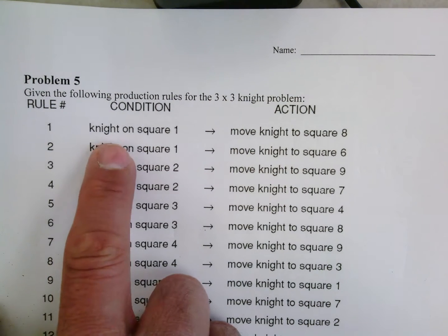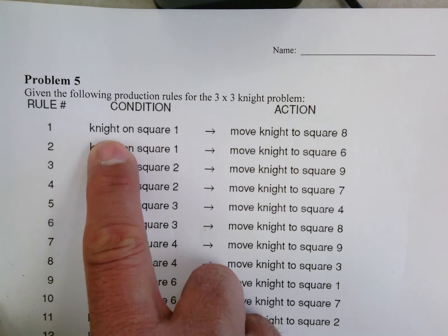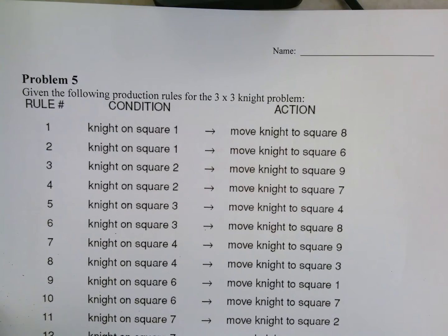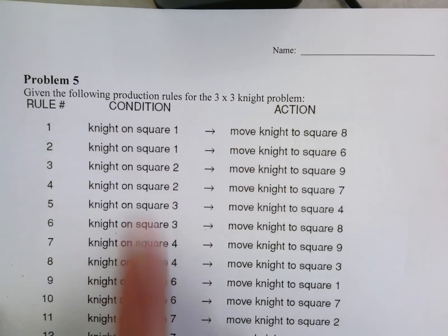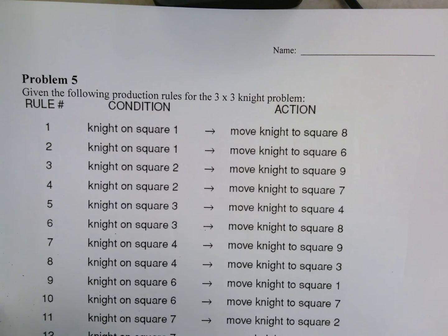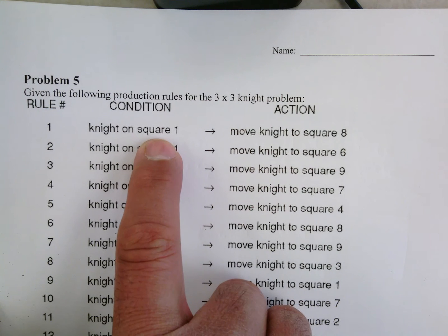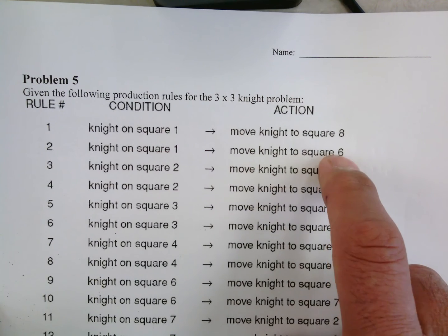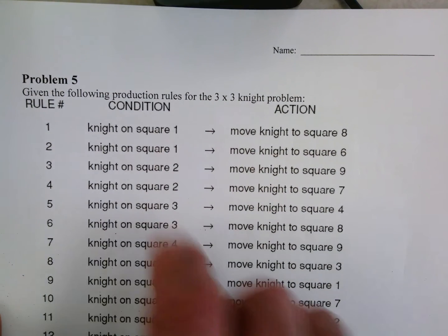For example, rule number one says: if the knight is on square one, then we want to move it to square eight. So we're tracking which square we're currently on. If we're on square one, our options are either to go to square eight or square six.